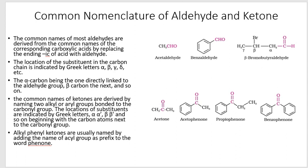In common nomenclature, the carbon bonded directly to the functional group is termed alpha, then beta, then gamma - alpha, beta, gamma are used instead of 1, 2, 3. In the case of ketones, the general common nomenclature involves naming both alkyl groups on either side followed by the word 'ketone'.